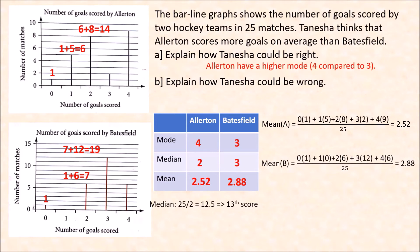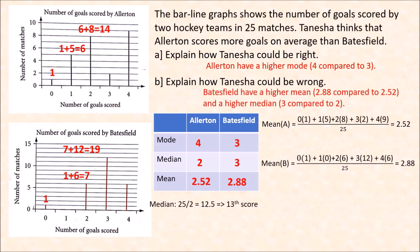So by the mean and median, Tanisha could be wrong, because Batesville has a higher mean — 2.88 compared to 2.52 — and it also has a higher median — 3 compared to 2 for Allerton.